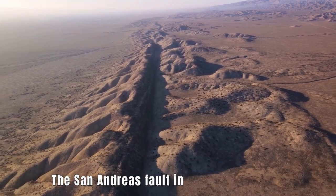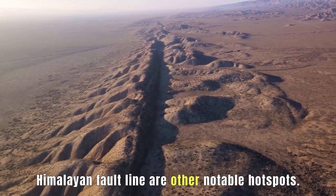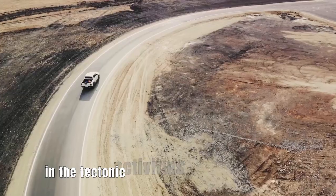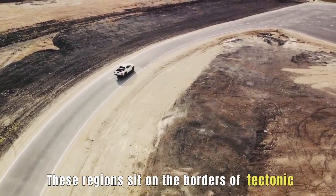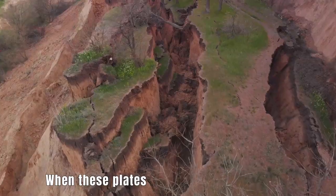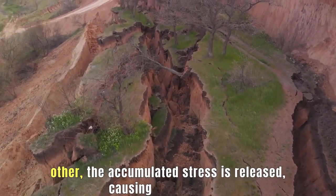The San Andreas Fault in California and the Himalayan Fault Line are other notable hotspots. The reason for their earthquake-prone nature lies in the tectonic activities beneath the Earth's surface. These regions sit on the borders of tectonic plates which are constantly moving, albeit slowly. When these plates collide or slide past each other, the accumulated stress is released, causing earthquakes.